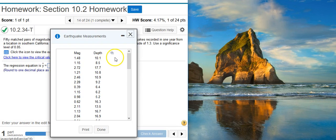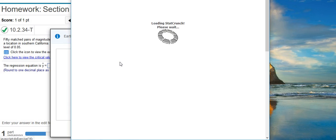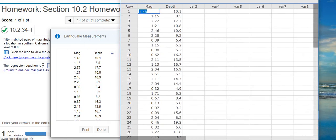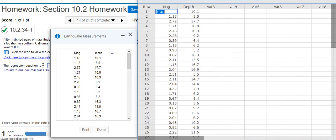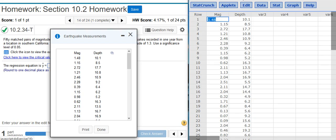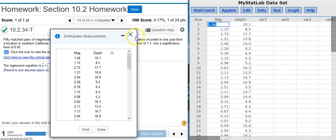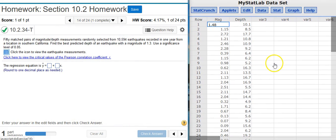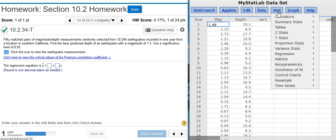So here's my data. I'm going to click on this icon, open my data in StatCrunch. I'm going to resize this window so we can see everything. Now in StatCrunch, I'm going to go to Stat, Regression, Simple Linear.